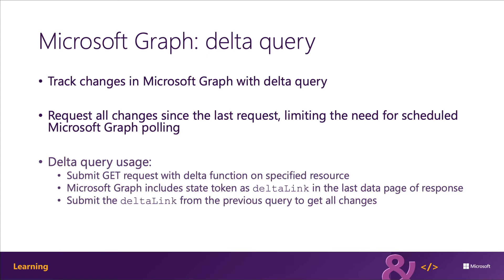To request the changes that happened in the resulting data set from the time that the previous query was submitted, the application uses the endpoint from the previous request's Delta link endpoint. This tells Microsoft Graph to execute the same query but only return the items that have changed since the first request, as indicated using the state token included in the Delta link property. The last page of results in the second request will include a new Delta link property that can be used for the next request, and so on and so forth.